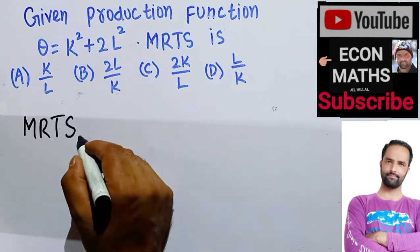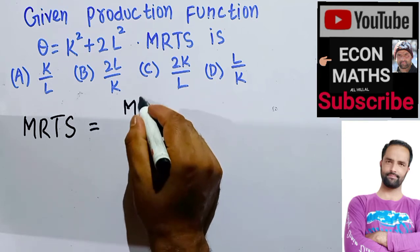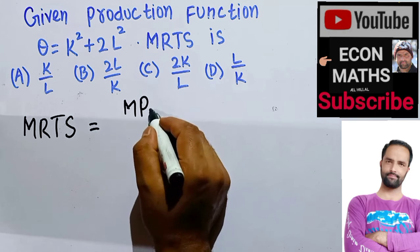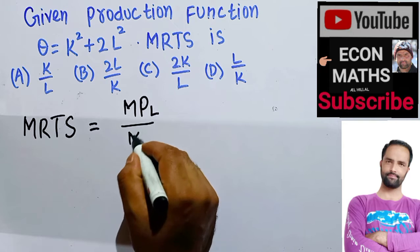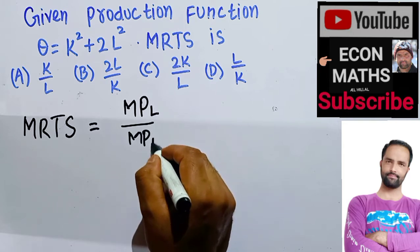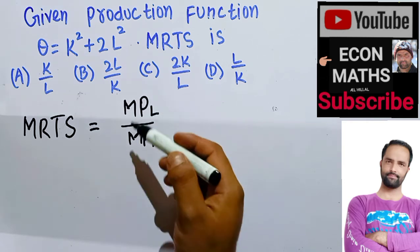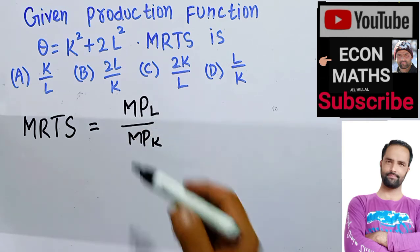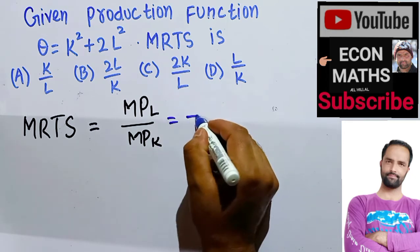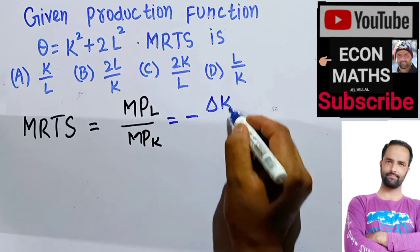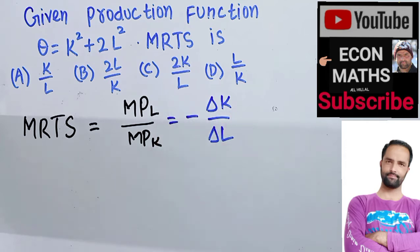By marginal rate of technical substitution, we simply mean the marginal product of labor upon marginal product of capital. The marginal rate of technical substitution is the ratio of marginal product of labor upon marginal product of capital, and this is equal to minus ΔK upon ΔL.